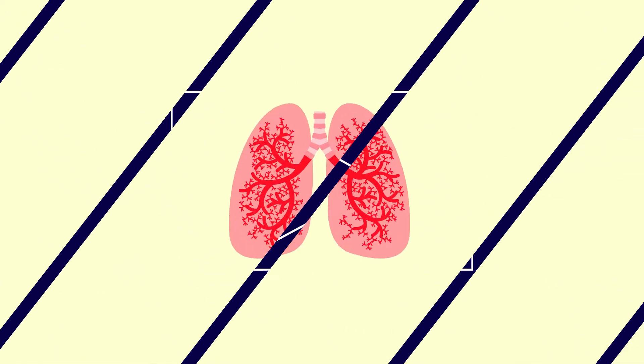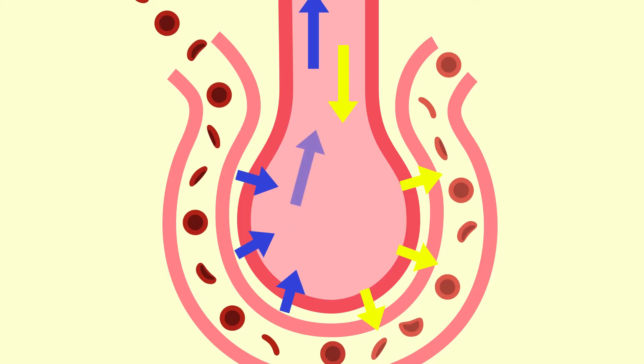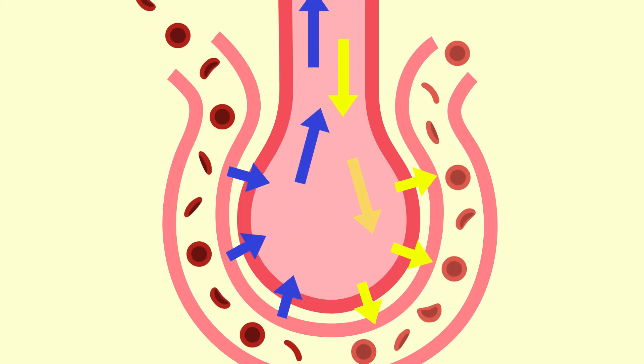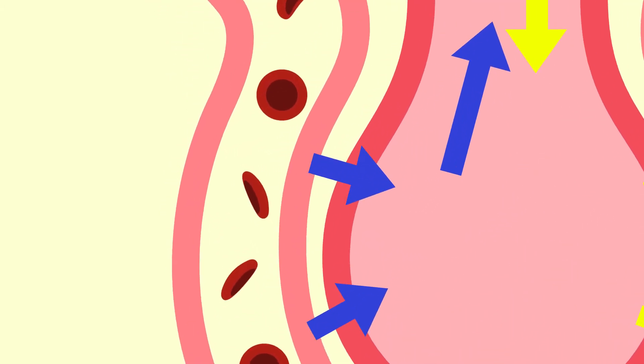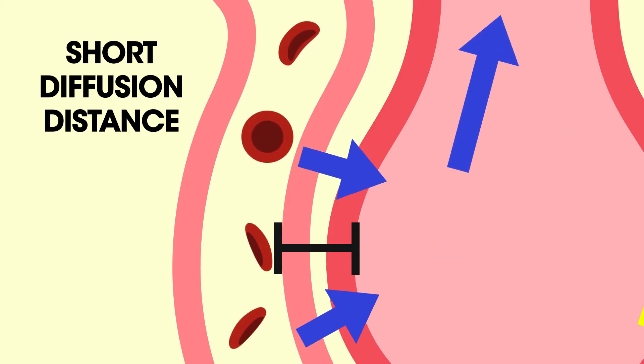The lungs have other adaptations to help increase the rate of diffusion of oxygen into the body and carbon dioxide out of the body. These adaptations include a short diffusion distance to the blood supply. It's a distance of just one cell.